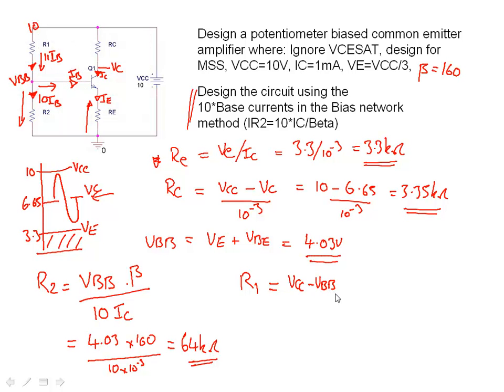Put beta up on top just to keep it nice and tidy. Put the numbers in: 10 minus 4.03, all divided by 11 times 10 to the minus 3, put 160 at the top, beta value.